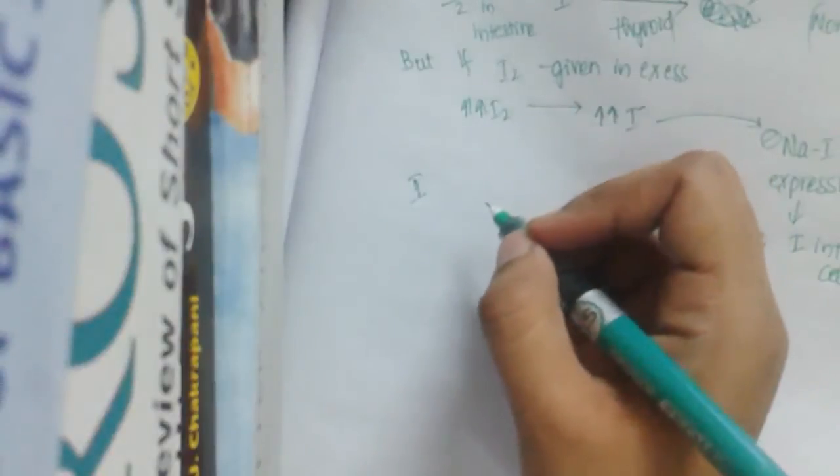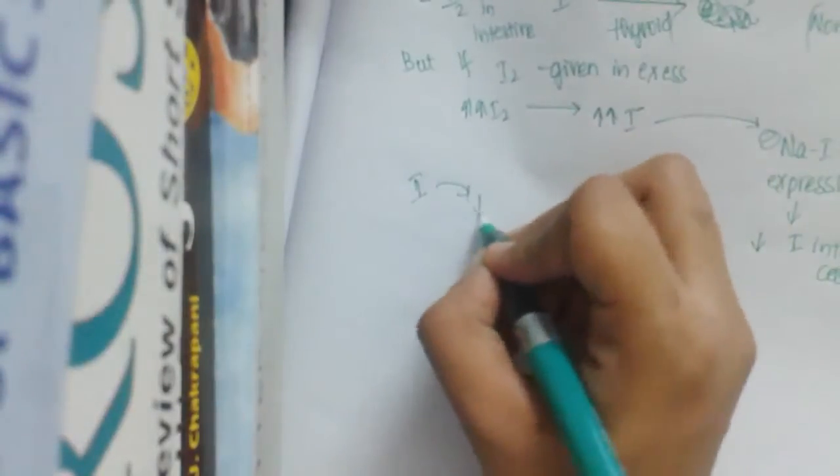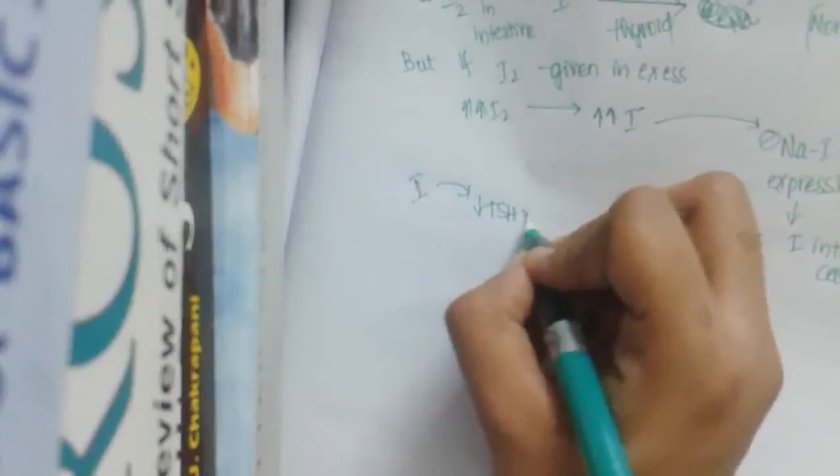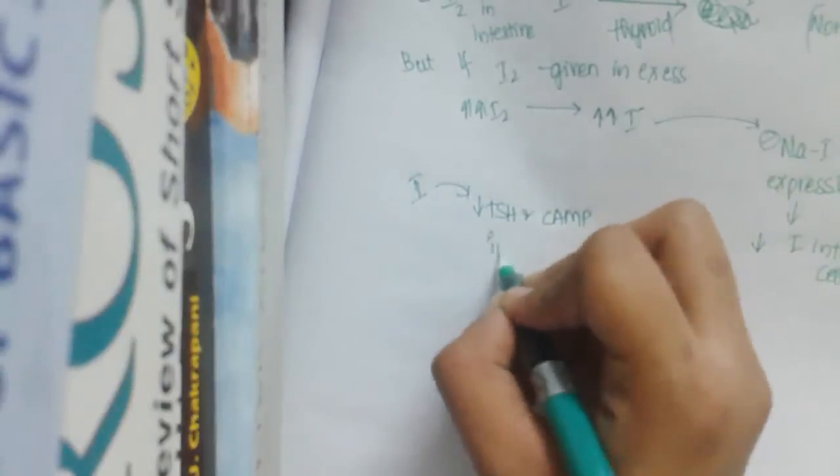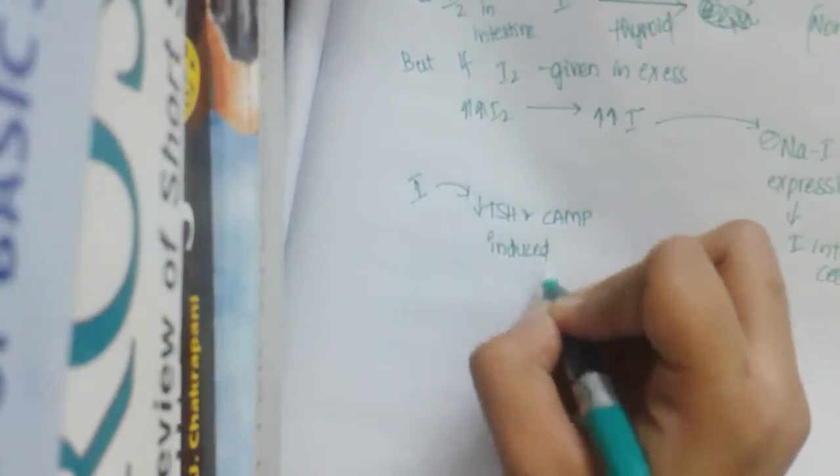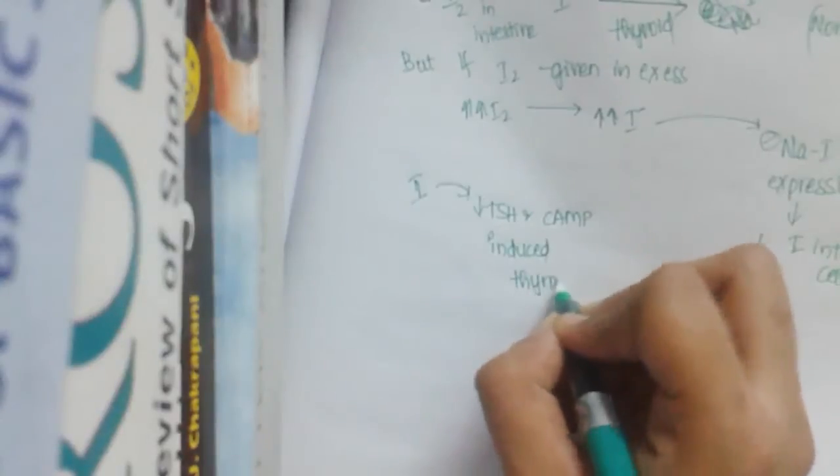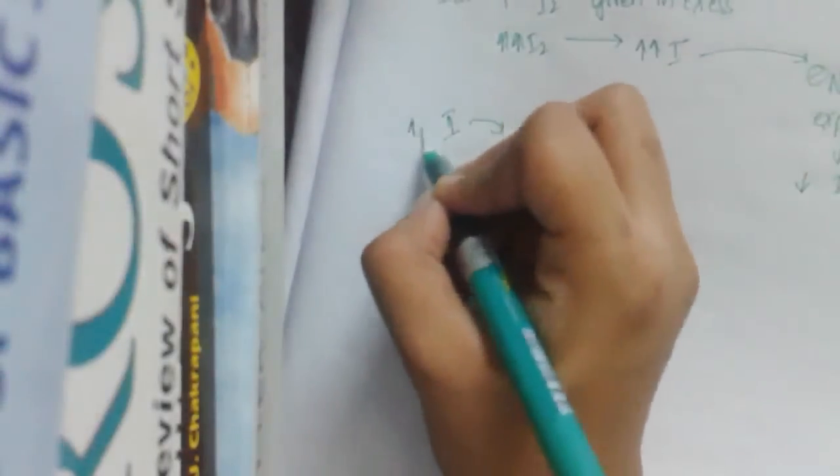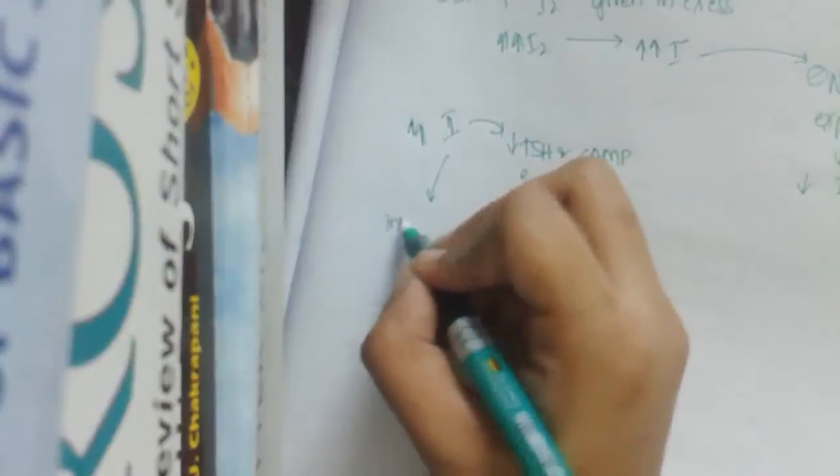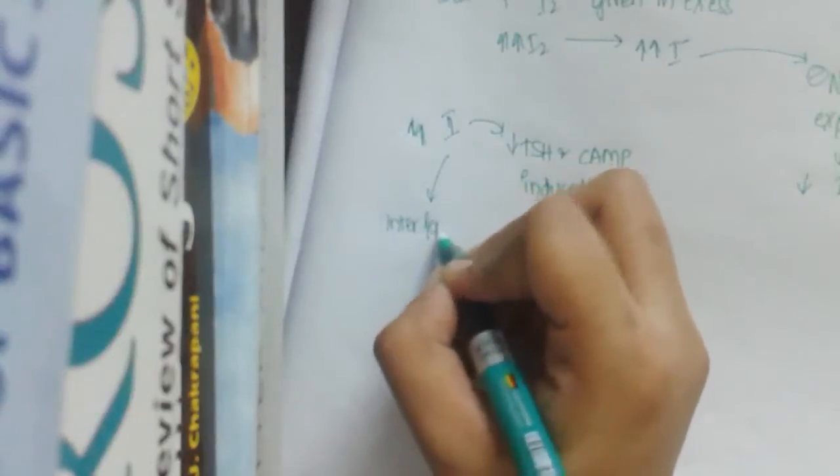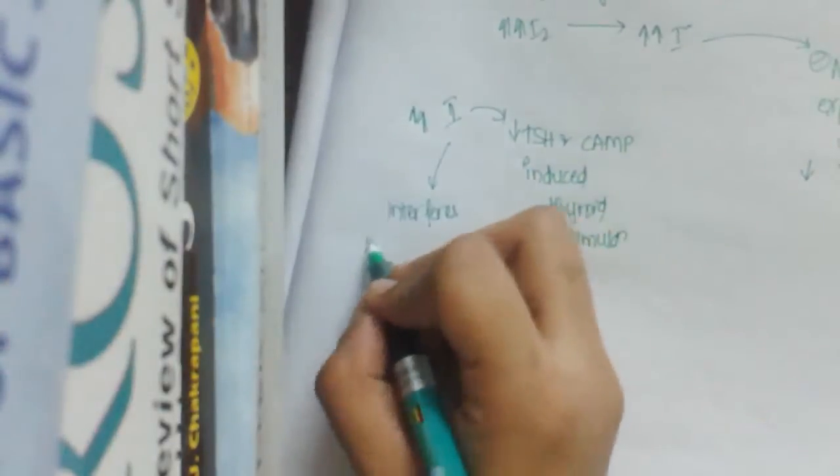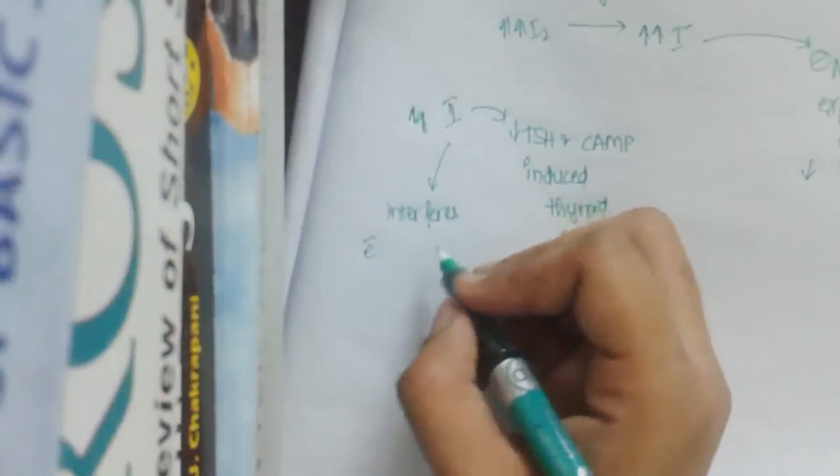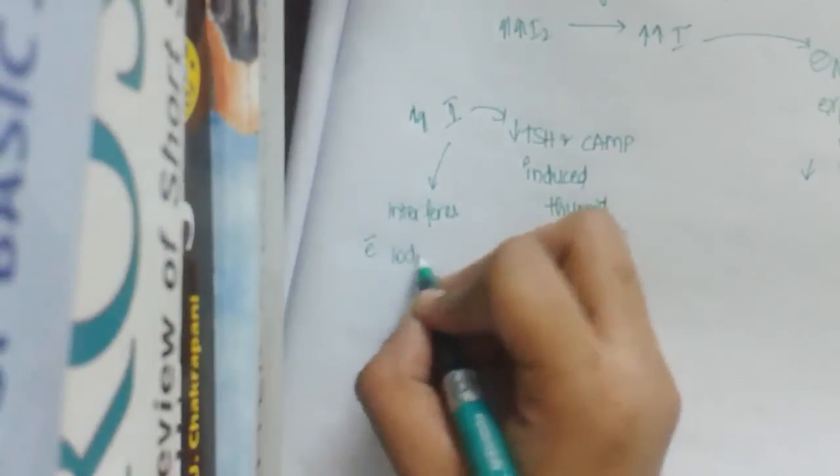Along with this, iodine also decreases TSH and cyclic AMP induced increased thyroid stimulation. If it is excess, this also interferes with iodination of tyrosine.